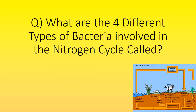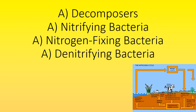What are the four different types of bacteria involved in the nitrogen cycle called? Decomposers, nitrifying bacteria, nitrogen fixing bacteria, and denitrifying bacteria.